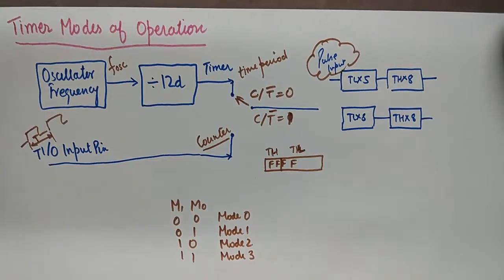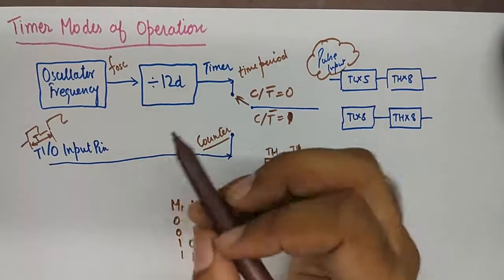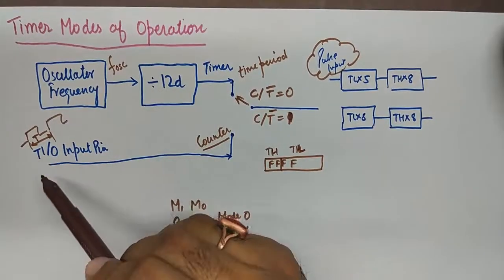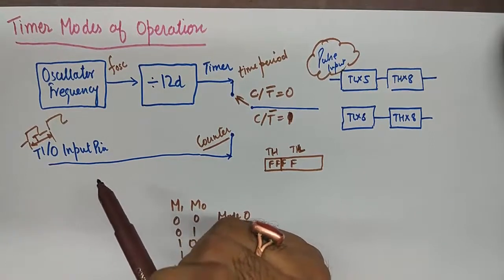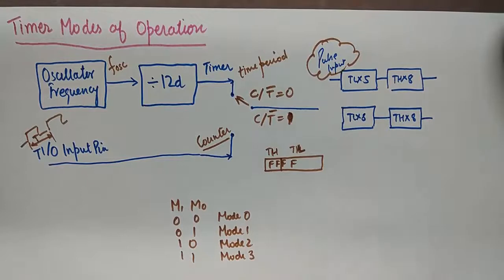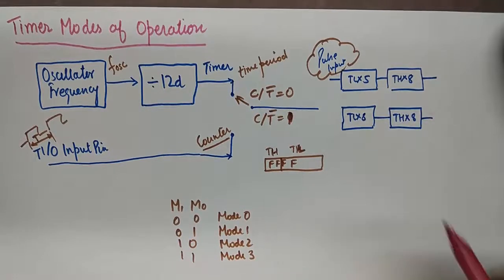Now, once we know that the time period is calculated from the oscillator frequency or from the clock which is attached to the T1 or T0 pin of the IC, we will need to see what all modes are possible in 8051. There are four modes.